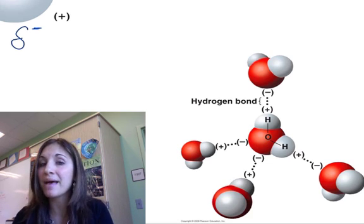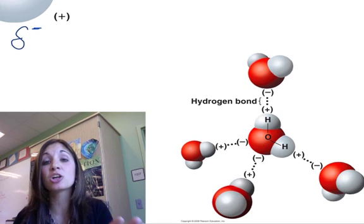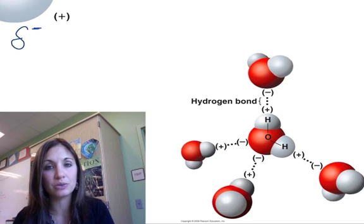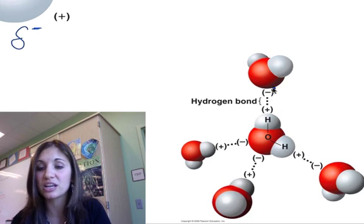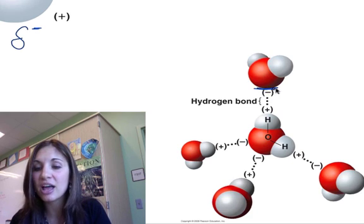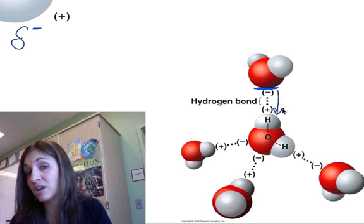But because like a magnet, different parts of the molecule have a slight charge, it means it's going to interact with different molecules. Remember that opposites attract. So if I bring two water molecules together, the negative oxygen end of one water molecule is going to be attracted to the positive hydrogen end of another water molecule.